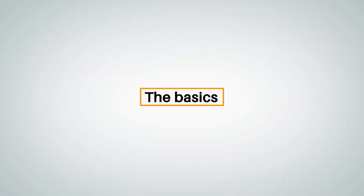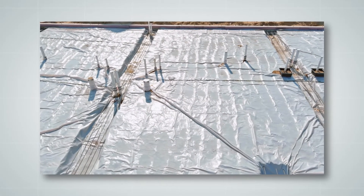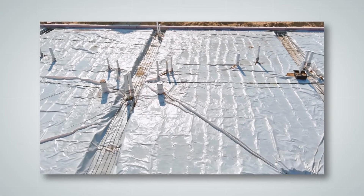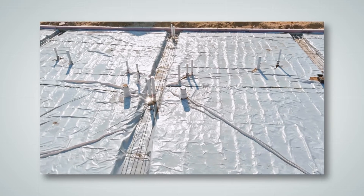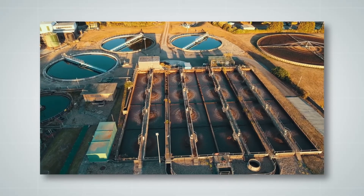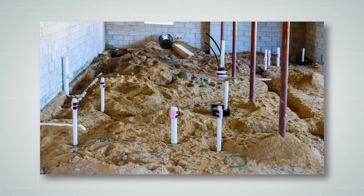A sanitary drainage system is made of pipes and other components, and designed to effectively move effluent discharge from plumbing fixtures and other equipment to an approved point of disposal. These would be points like a public sanitary system or a private on-site water treatment system.